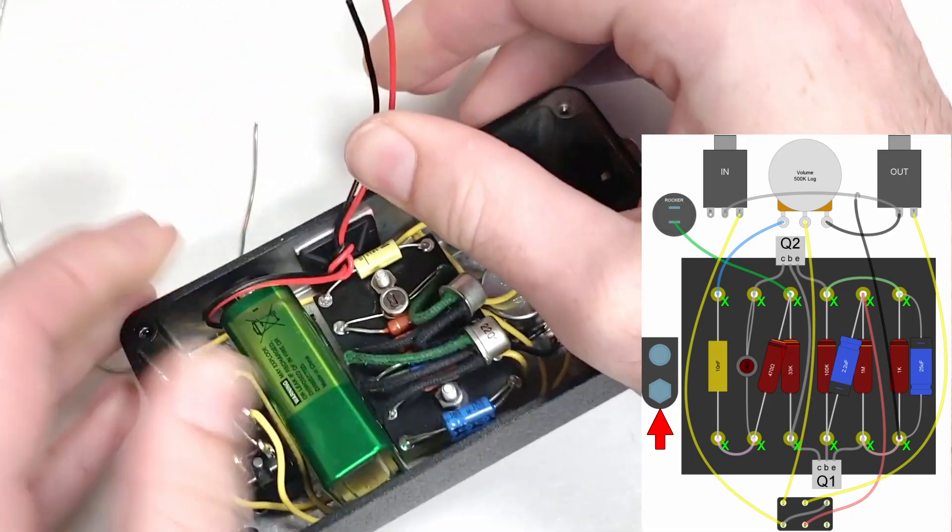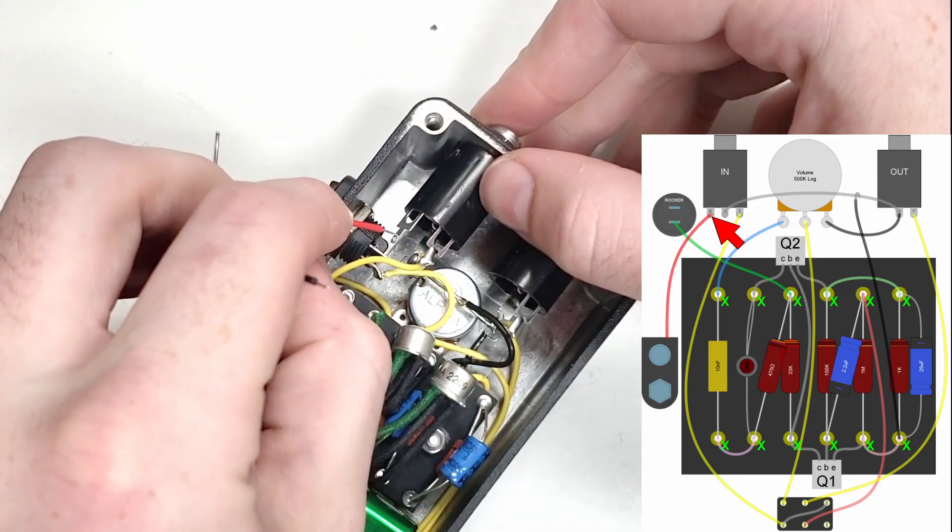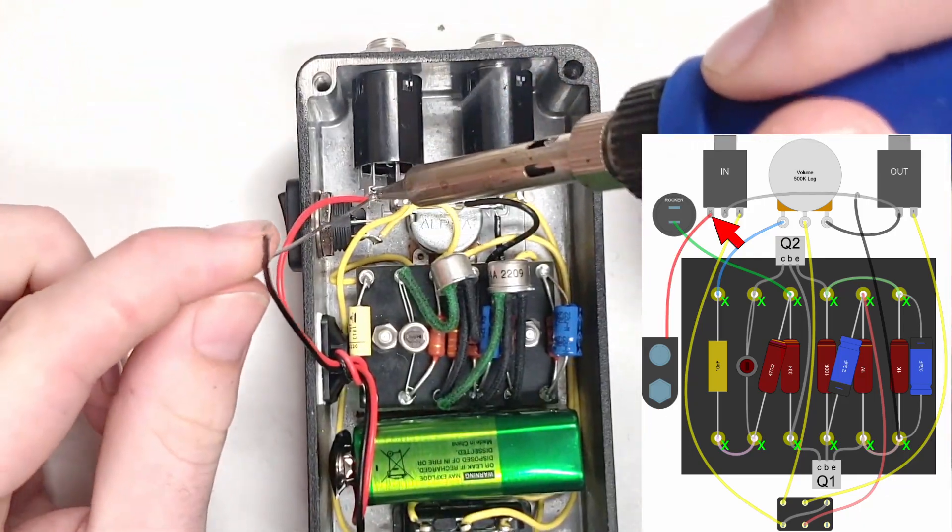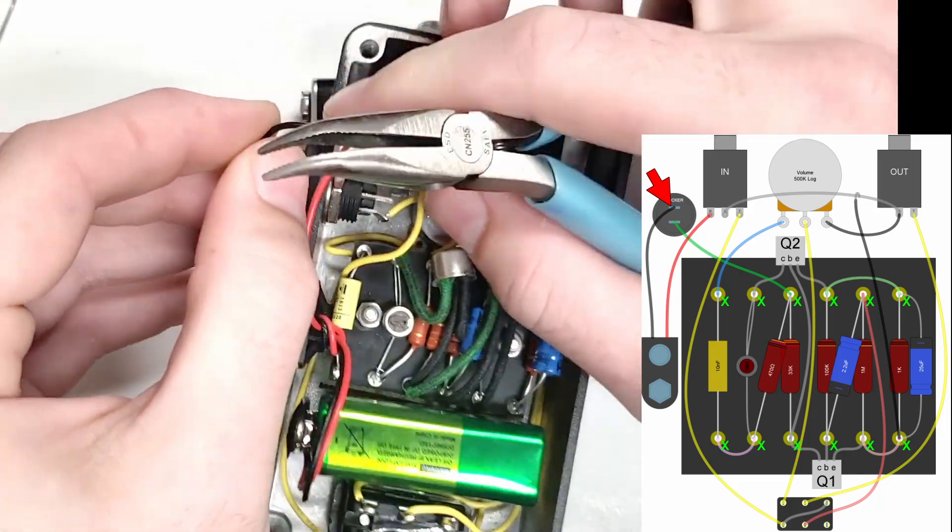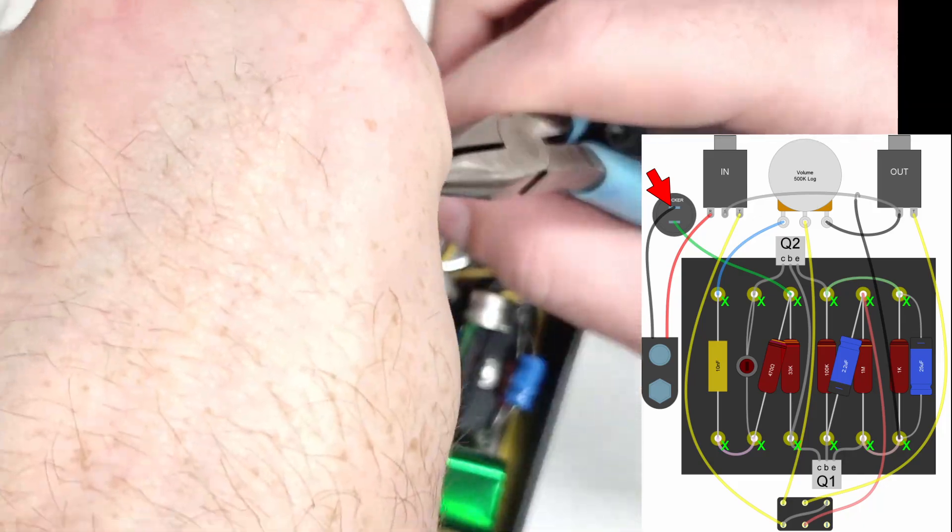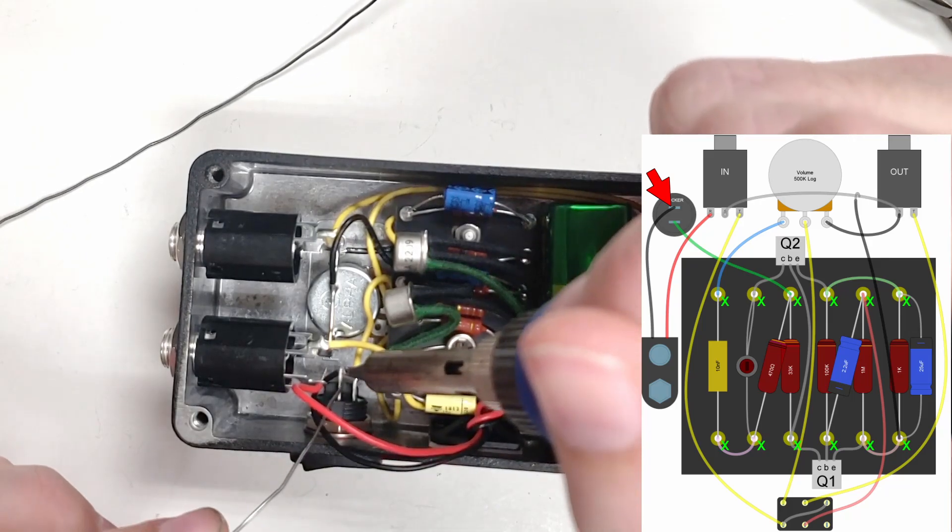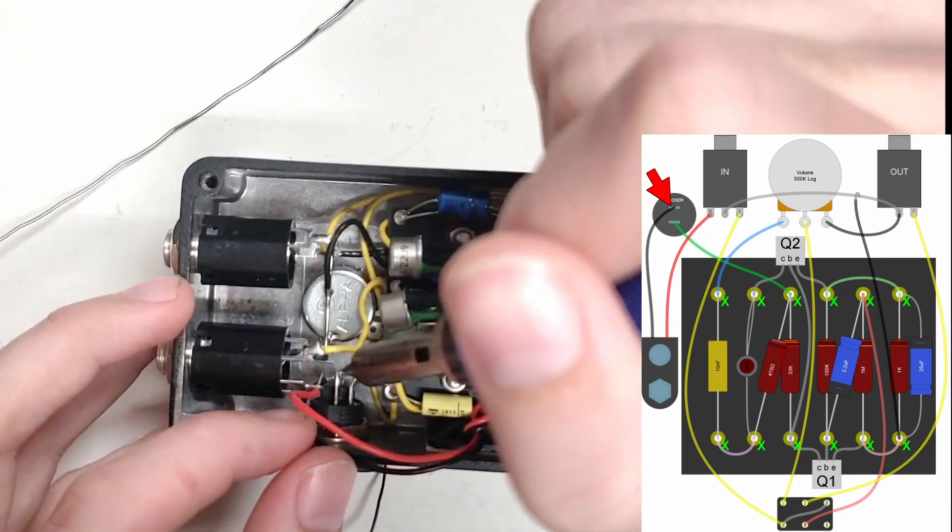With the strain relief installed, the battery leads can be soldered in. The red positive lead should connect to the input jacks ring lug, which will cause the battery to disconnect when the input plug is removed. The black negative lead should connect to the unused lug of the rocker switch, which allows for battery disconnection using the switch.